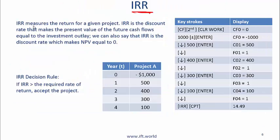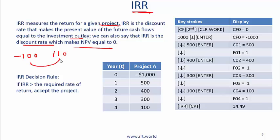Next, IRR. IRR measures the return for a given project. IRR is the discount rate that makes the present value of the future cash flows equal to the investment outlay — or equivalently, IRR is the discount rate which makes NPV equal to 0. For example, if you have an investment of 100 and the project has a cash flow of 110 after one year, then the discount rate which makes the present value of 110 equal to 100 is 10%. So 10% is the IRR, and note that through this simple example, 10% is also the return of the project. This is called internal because you have generated that 10% purely based on this cash flow — it's not based on anything else.